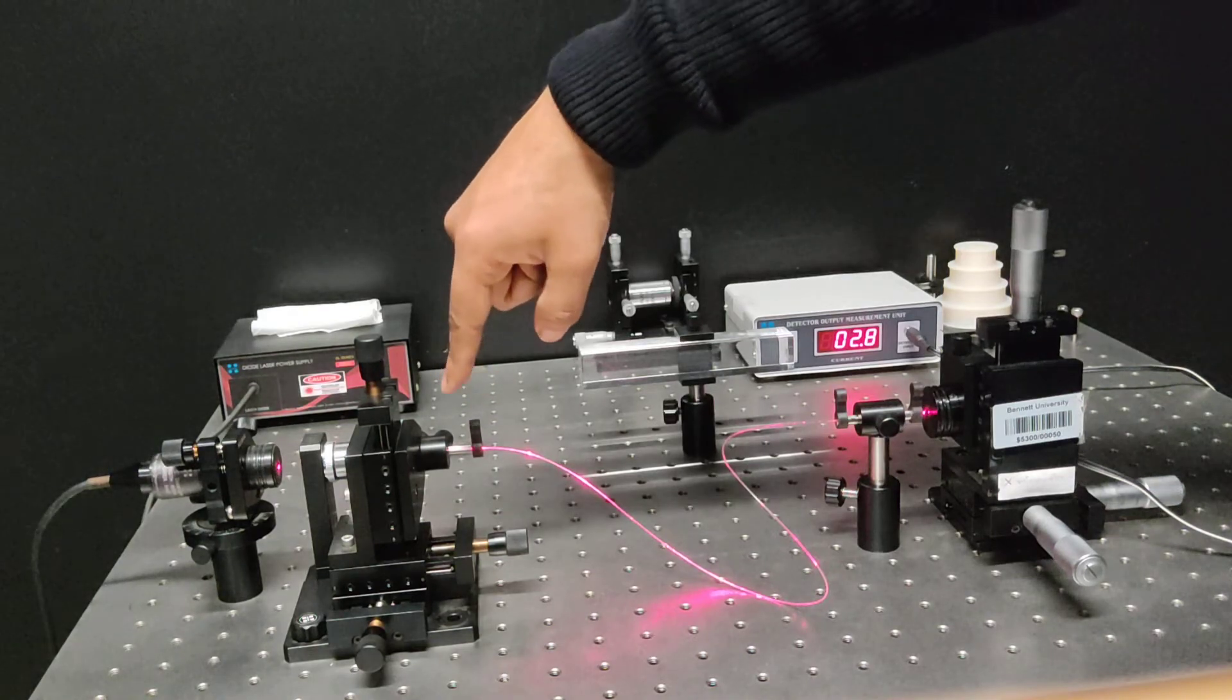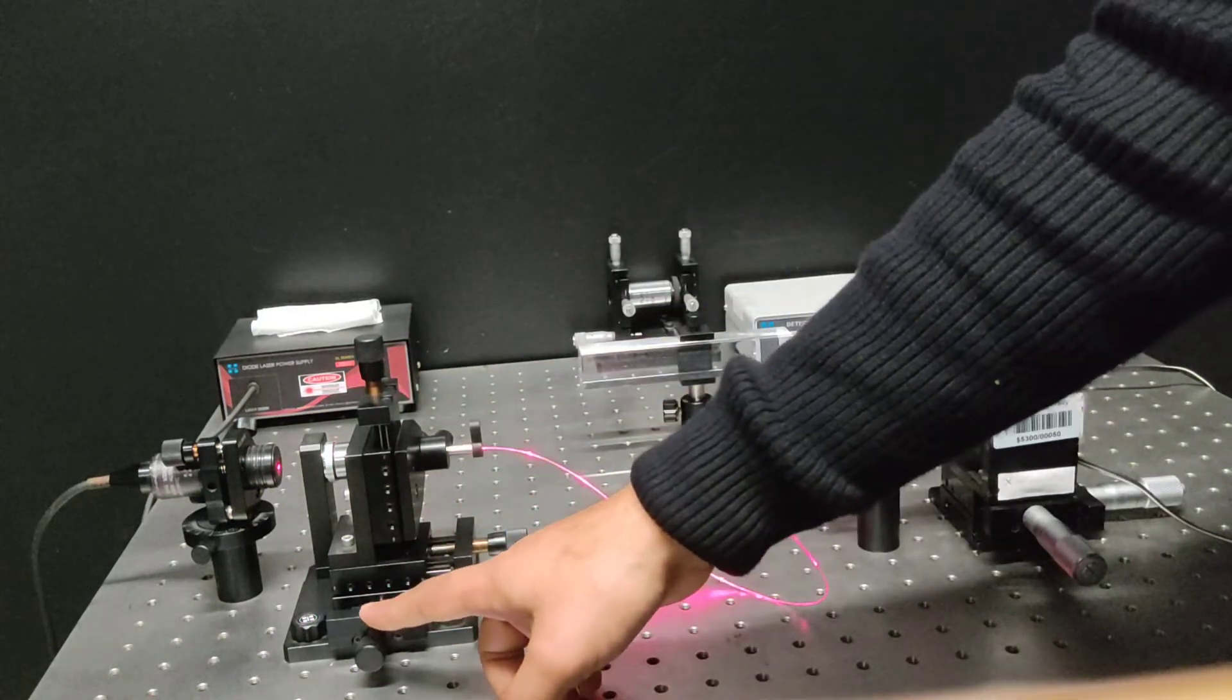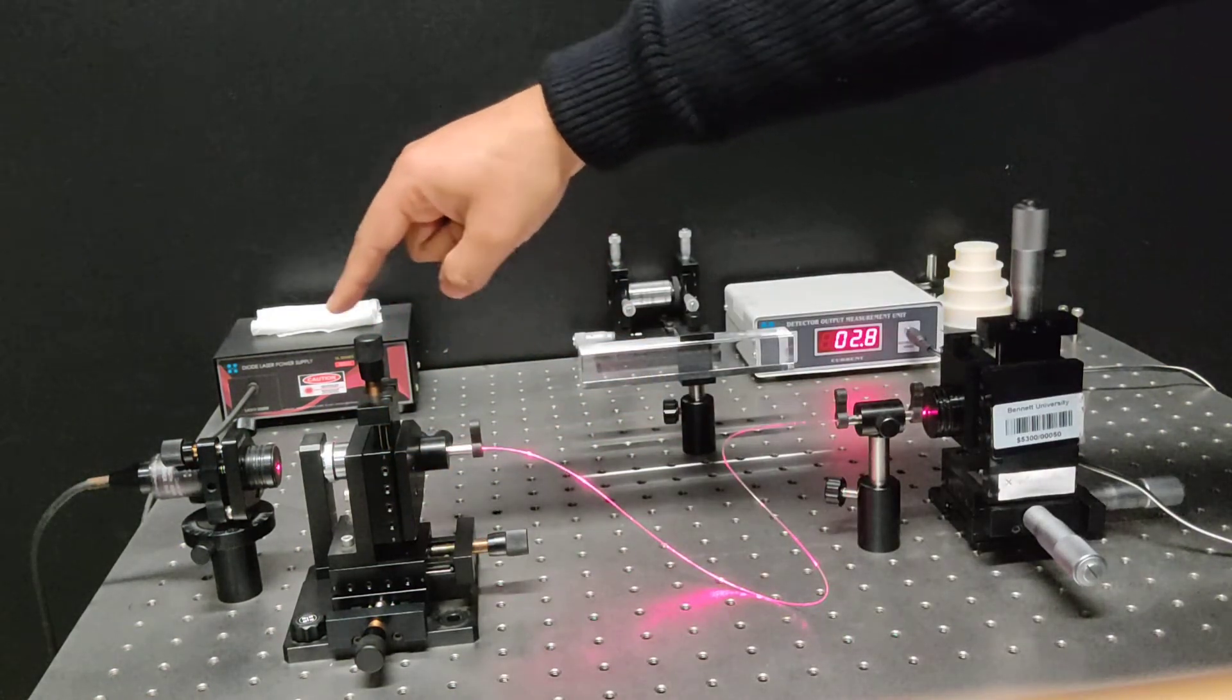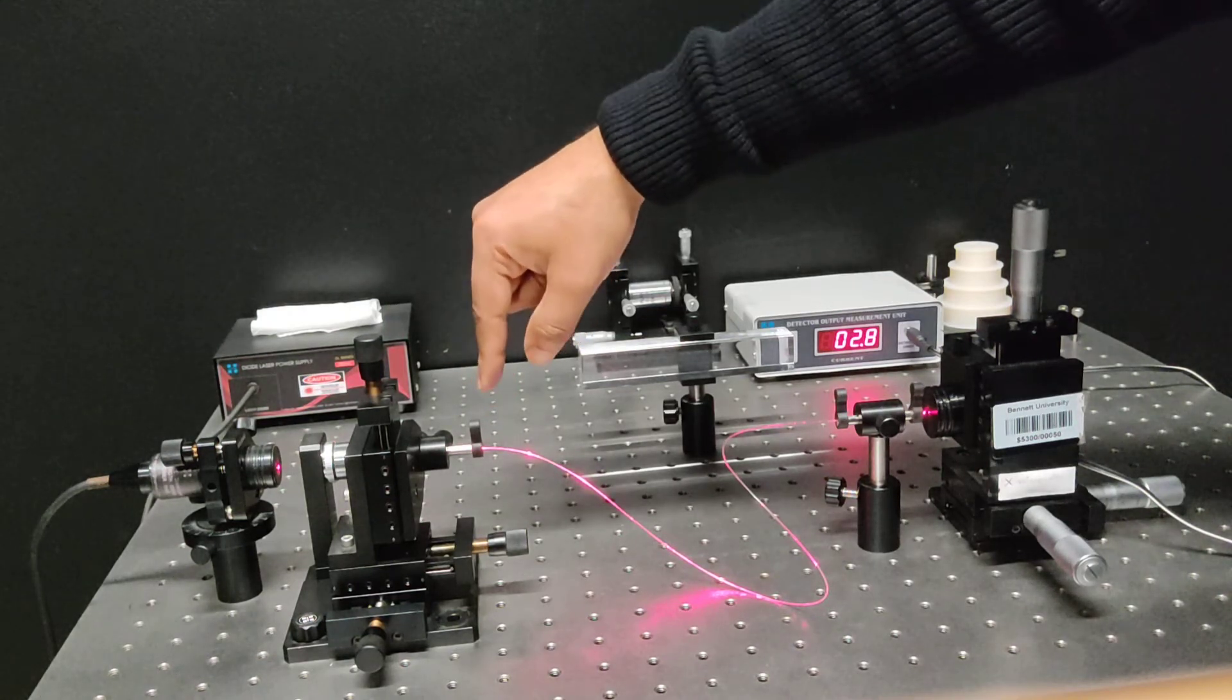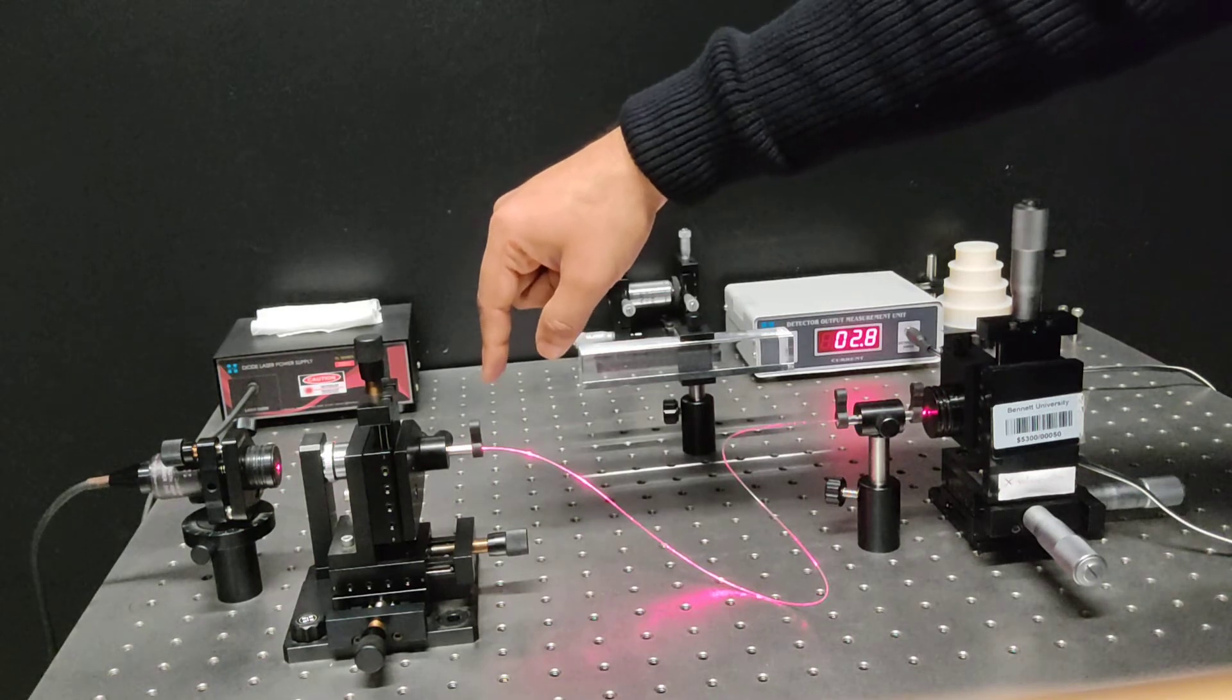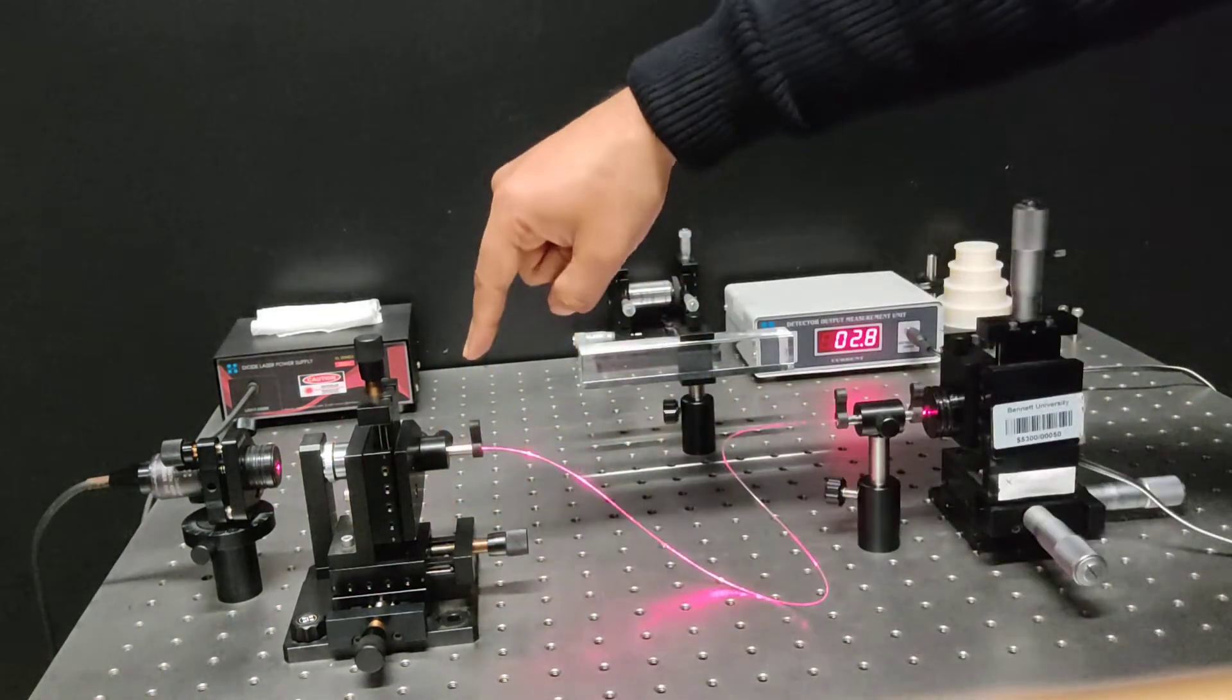The fiber chuck is actually attached to a positioner stage so you can make use of these knobs to optimize the coupling of light from laser to the fiber. Since the core dimension of this fiber is relatively larger, it's easier to couple the light, but whenever it comes to coupling light to a single mode fiber it will give you a nightmare.